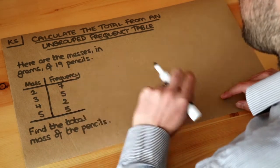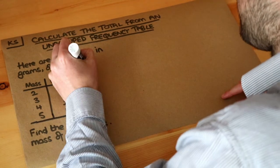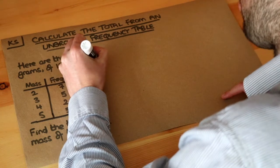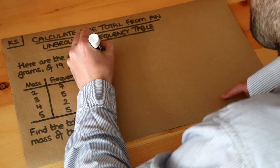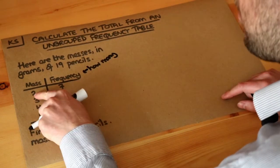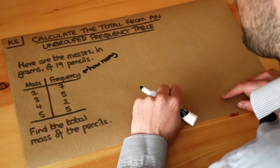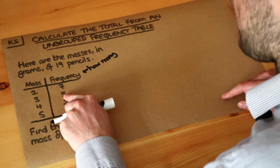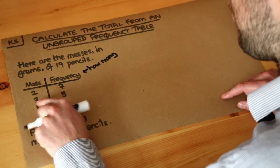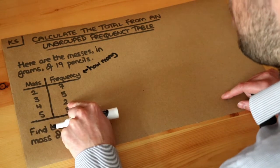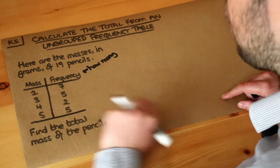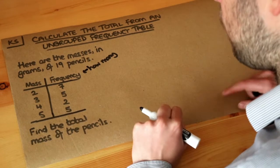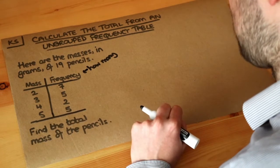A frequency, remember, just means how many we have — how common it is. So that's saying we have 7 pencils with a mass of 2 grams, 5 pencils with a mass of 3 grams, 2 pencils with a mass of 4 grams, and we want to find the total mass of all the pencils.